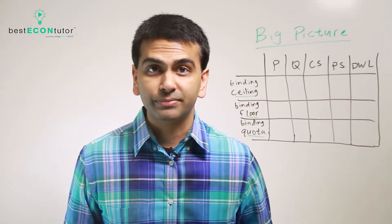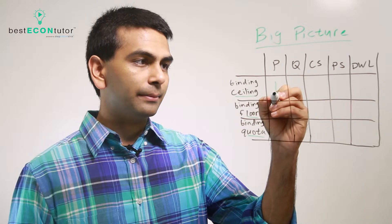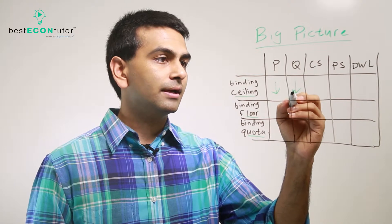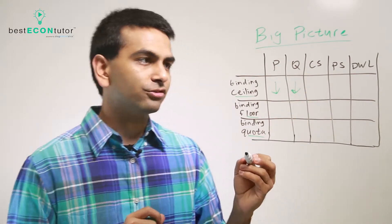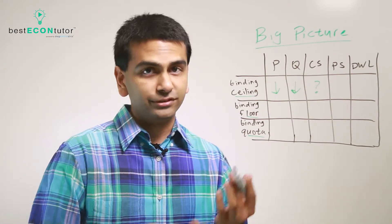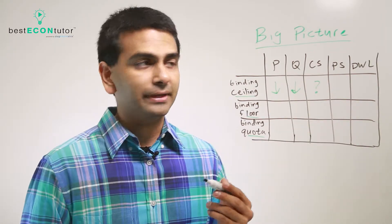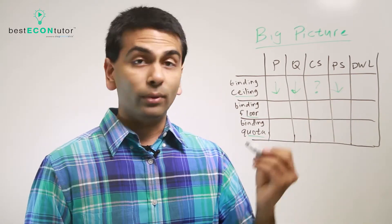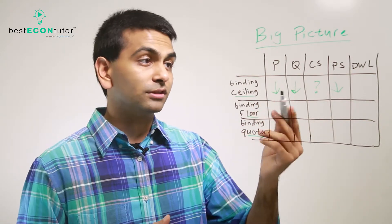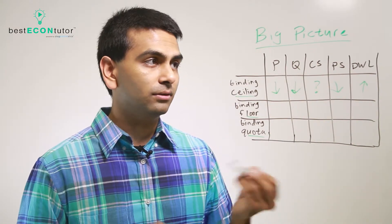Let's look at the big picture. A binding price ceiling lowers the equilibrium price and lowers the equilibrium quantity transacted. Consumer surplus is ambiguous — some consumers who get to pay the lower price are better off, but others who can't buy the product anymore are worse off. Producer surplus definitely goes down since producers face both a lower price and lower quantity. Deadweight loss increases from zero to the area of that triangle.